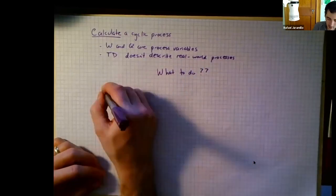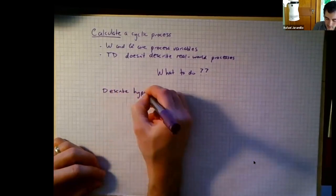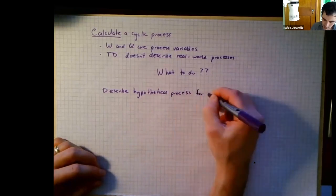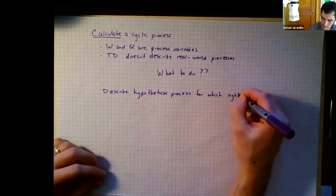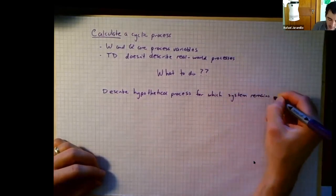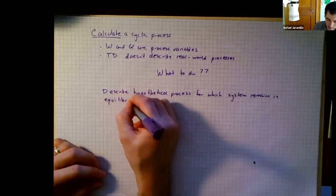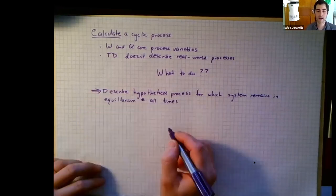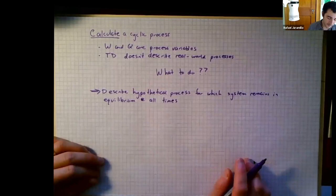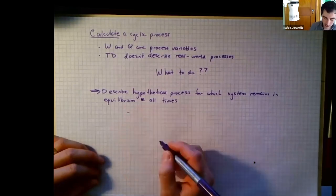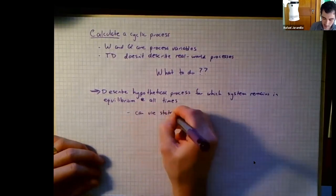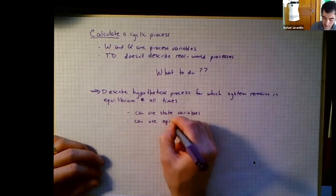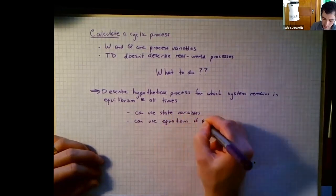We describe a hypothetical process — and this is weird, it is just weird — but if we do this, we can use state variables and equations of state if they're available. Something to keep in mind: in practice, such a cycle would take infinite time.